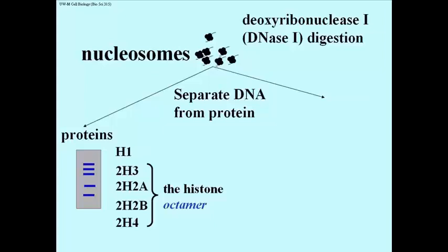An interesting feature of these histones is that, unlike most other proteins, they are very rich in the basic amino acids lysine and arginine. These are amino acids whose side chains have amino groups. At pH 7 — neutral pH, the pH found in nuclei and cytoplasm — amino groups acquire a proton and become positively charged.